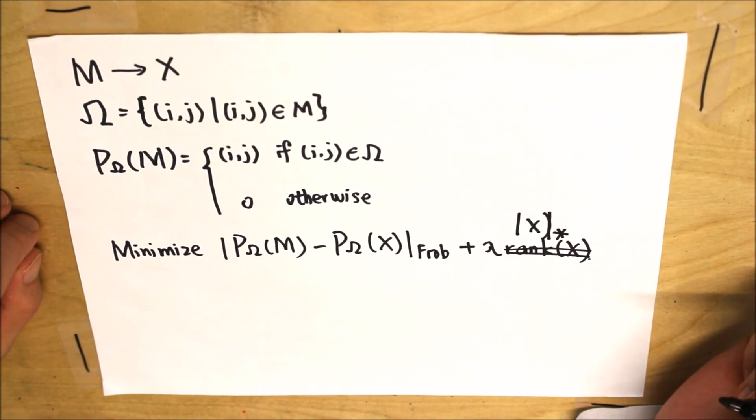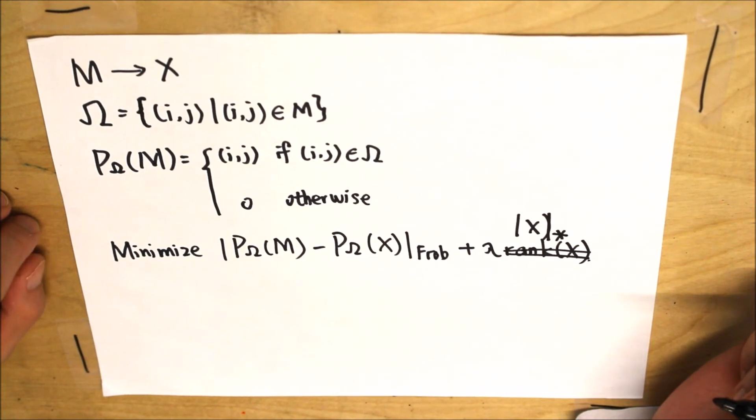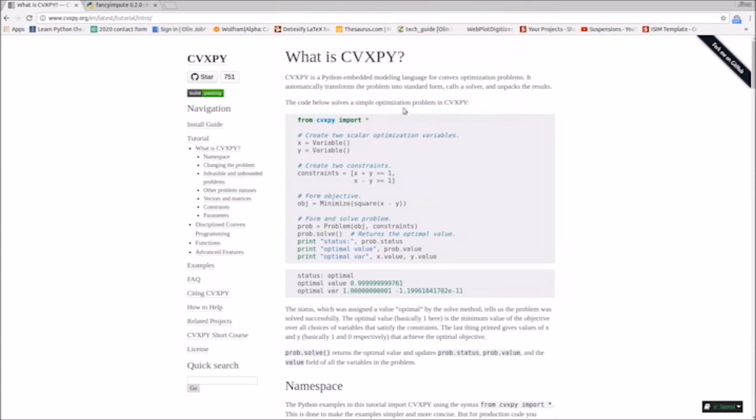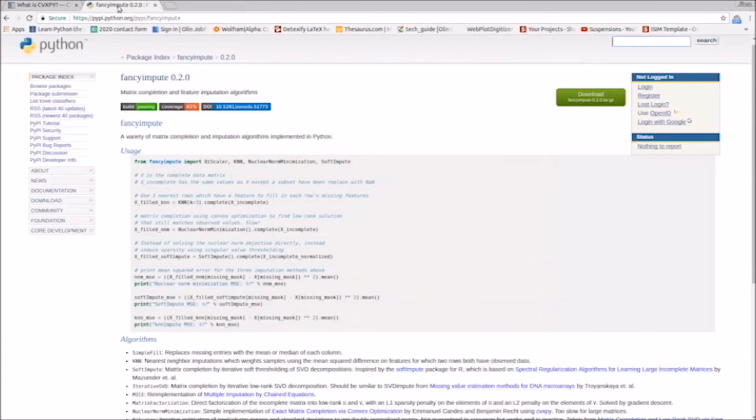And now we are actually going to demonstrate a simple example of matrix completion. So it is actually really difficult to solve this by hand. So we use a Python library called cvxpy, which basically solves any optimization problem. And we need another library called fancyimpute, which does the matrix norm minimization problem.